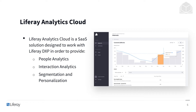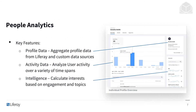Over here on the right we have a dashboard showing the interest trends among some users. For people analytics, our key features start with profile data — we have aggregate profile data from Liferay and custom data sources. We have activity data, where you can analyze user activity over a variety of time spans, including looking at a specific day's worth of activity. We also have intelligence, which calculates interest based on engagement and visited topics. We can see that this user is most interested in DXPs, with modern portals coming in second.